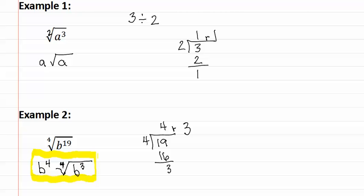Remember, when simplifying radicals with variables, you need to divide the exponent by the index. The whole number is how many things will be coming out and the remainder is how many things remain inside. You can do this with scratch work to the side of your problem or in your head.